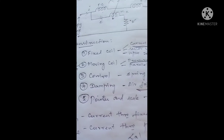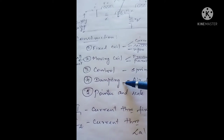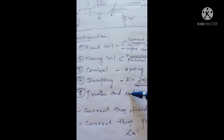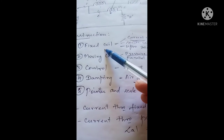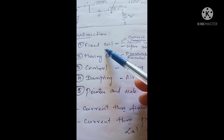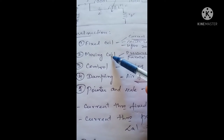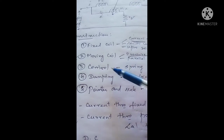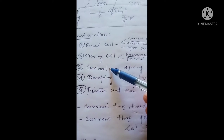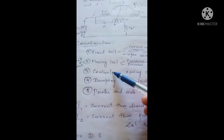The five main parts of the electrodynamometer wattmeter are: fixed coil arrangement, moving coil arrangement, control arrangement, damping arrangement, and pointer and scale arrangement. The fixed coil is connected in series with the load so it's called the current coil. The moving coil is connected in parallel with the supply voltage so it's called the pressure coil.